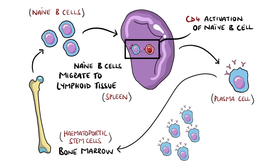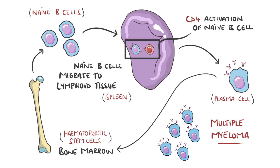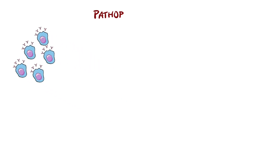In multiple myeloma, there is uncontrolled replication of the plasma cells and secretion of the immunoglobulins or their components, termed monoclonal proteins.